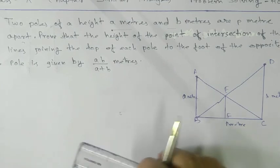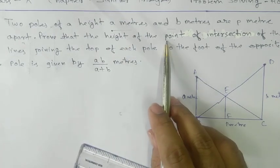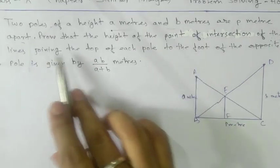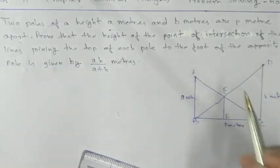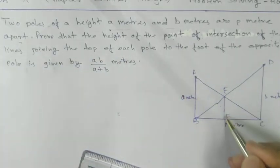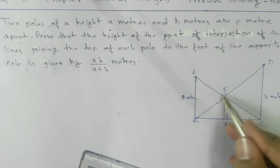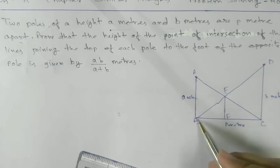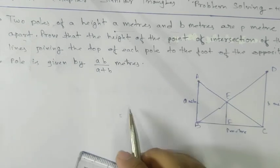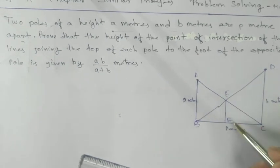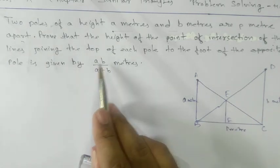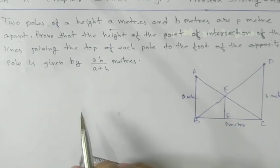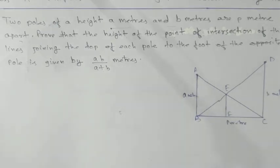See what they are saying: height of the point of intersection — this is your intersection of the line joining the top of each pole. So this one is EF. They are asking for the height of the intersection from the foot. We need to prove that EF equals AB divided by A plus B meter.